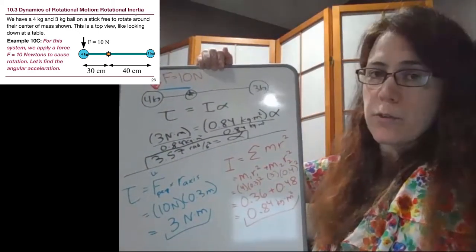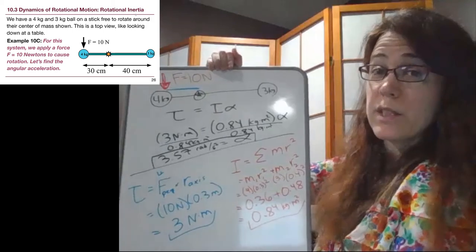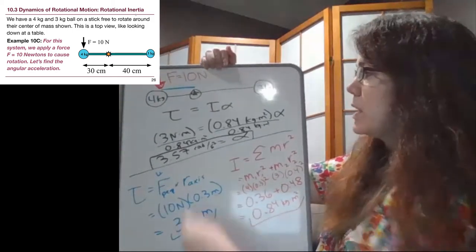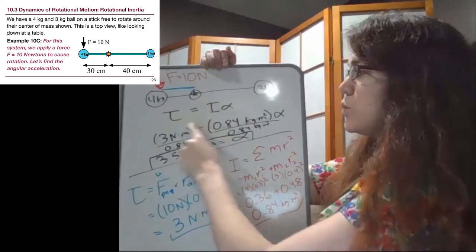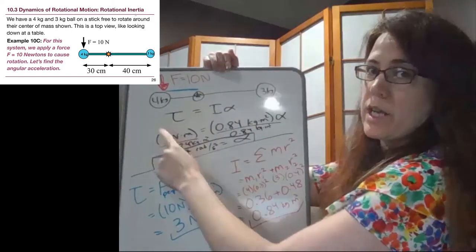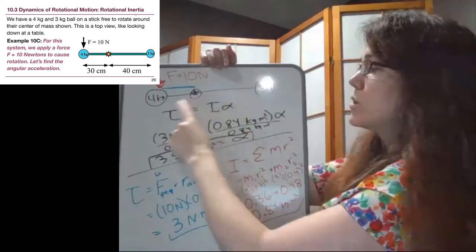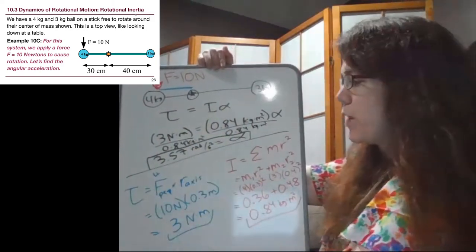So the key thing for some of these problems that are going to be in this section of the chapter is that this is our key tool in the same way that f net equaled ma was our key tool from chapters 4 and 5.